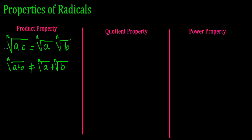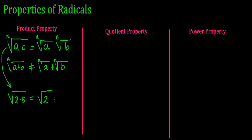So let me give you an example of how the product property works. For example, if I have the square root of 2 times 5, the product property tells me that I can separate those factors into their own radical. I can write it as a product of roots — square root of 2 times the square root of 5.